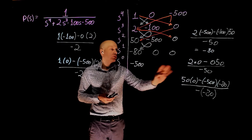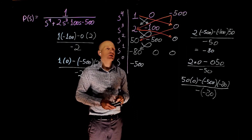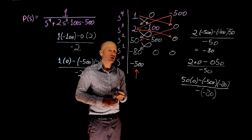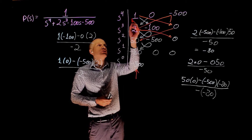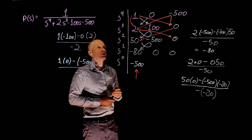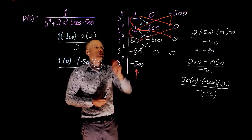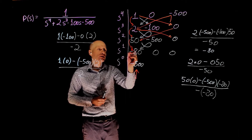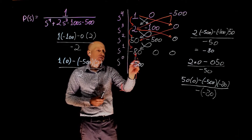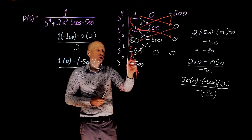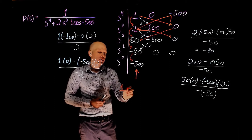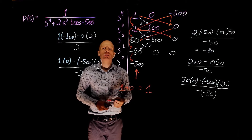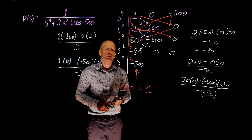This is now the completed array. We don't need the last two numbers. To evaluate stability, we look at the first column and count sign changes. From 1 to 2: no sign change. From 2 to 50: no sign change. From 50 to negative 80: 1 sign change. From negative 80 to negative 500: no sign change, negative to negative. We have 1 sign change total — the system is unstable, with 1 unstable pole on the right side of the s-plane.